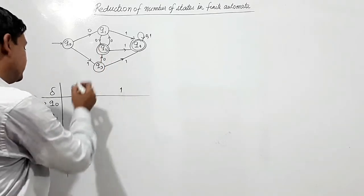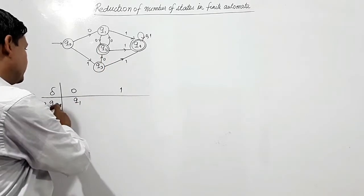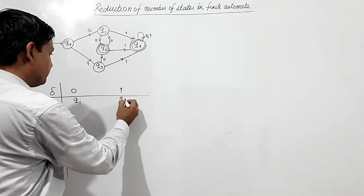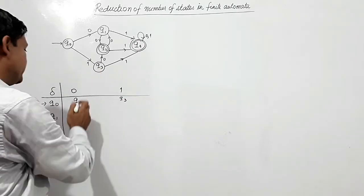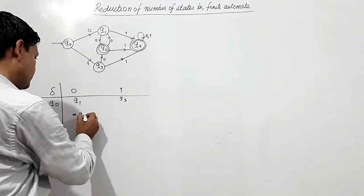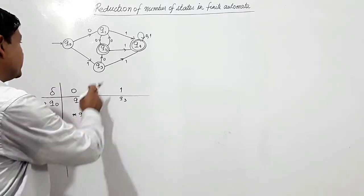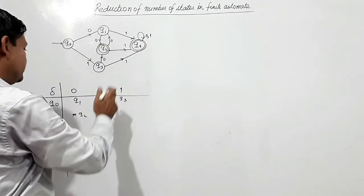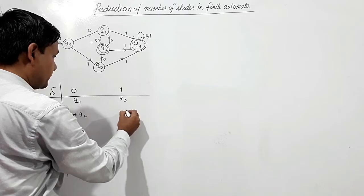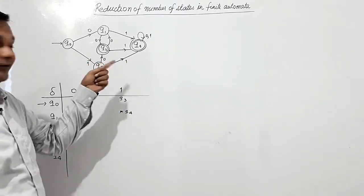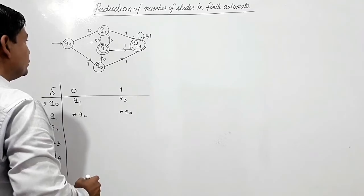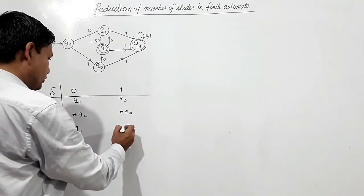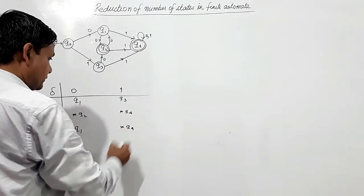Q0 on 0 is going to Q1 and Q0 on 1 is going to Q3. Q1 on 0 is going to Q2 and Q1 on 1 is going to Q4. Q2 and Q4 are the final states. Q2 on 0 is going to Q1 and Q2 on 1 is going to Q4.